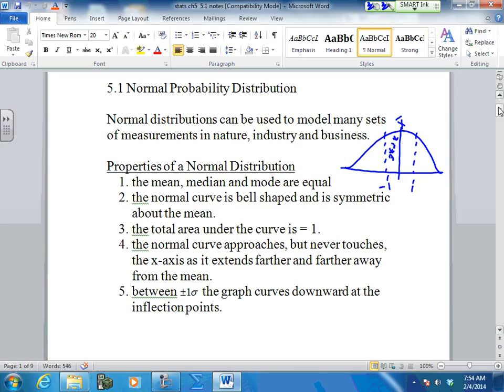The normal curve approaches but never touches the x-axis. These lines down here, that's why they show them going like this. They never touch the x-axis. We could go as far out as a z-score of 100. We will find something. It will be so minimal that it probably doesn't read anywhere in your chart, but we can find it.